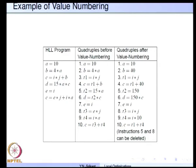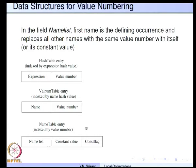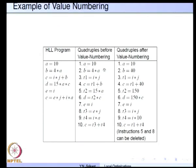Let me explain how the value numbering technique is applied on this program. We start with the first quadruple. There are three tables: the hash table for expressions, the valnum table for names, and the name table for constants. For a = 10, the quadruple remains the same; we enter a into the valnum table and also the name table because this is a constant. As soon as we have 4*a, a is a new name we have encountered. As soon as we enter it into the hash table we generate a new value number for it and assign a that particular value number.